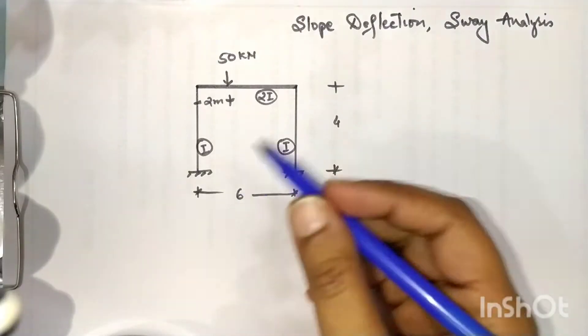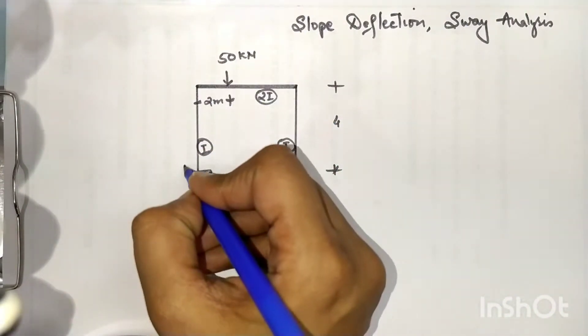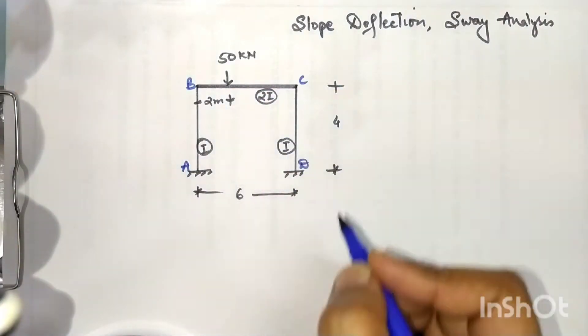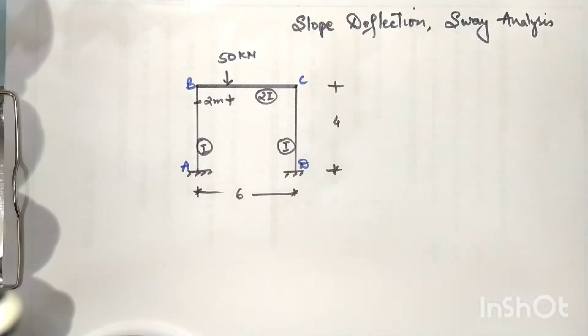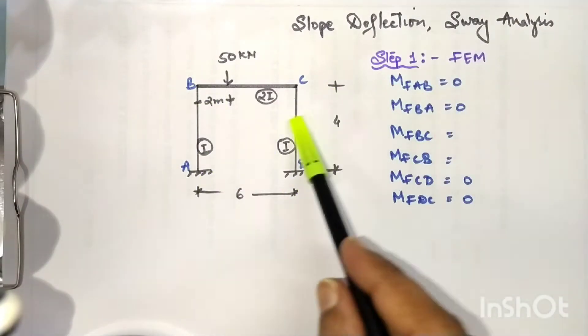There is a portal frame, so we have to analyze this portal frame using slope deflection analysis. Let's number them A, B, C, D. So this is our portal frame. Step number one: fixed end moments.